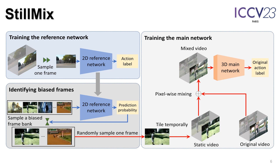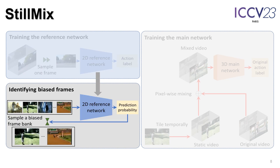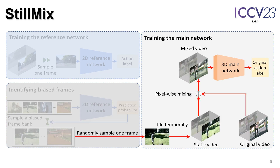To mitigate static bias in both the background and the foreground, we propose Still Mix. First, we randomly sample one frame from a video and train a 2D reference network with the label of the video, so that the reference network learns correlations between static frames and action classes. Second, we use the 2D reference network to identify frames with high prediction probabilities to construct a biased frame bank. Third, we randomly sample one frame from the biased frame bank, tile it temporally into a static video, and mix it pixel-wise with a given original video. The action label of the mixed video is kept the same as the original video, and this pair is used to train a 3D main network.